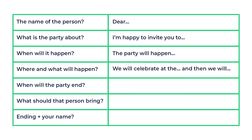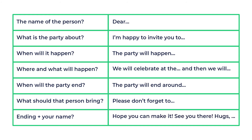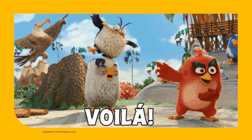Then I tell him when to come. The party will happen on the 27th of November at 12 o'clock. We will celebrate at the aqua park and then we will drive to my house and have some pizza and snacks. For many people it is also important to know when they will be free and can go home. The party will end around 6 pm, so your parents can pick you up then. Please don't forget to take your swimsuit and a towel. Then I just put a tiny ending like: Hope you can make it! See you there! Hugs! Natalia! And voila! The invitation is ready!